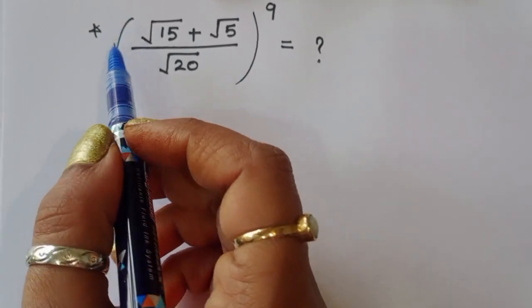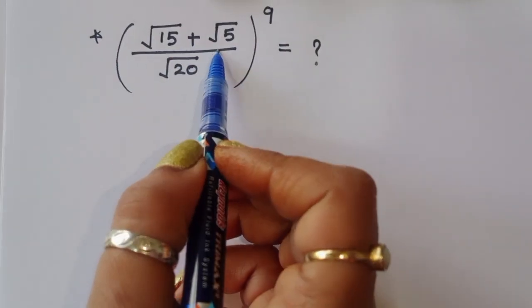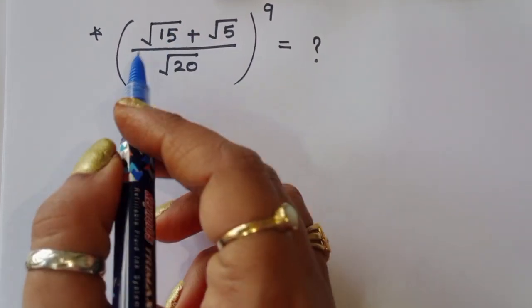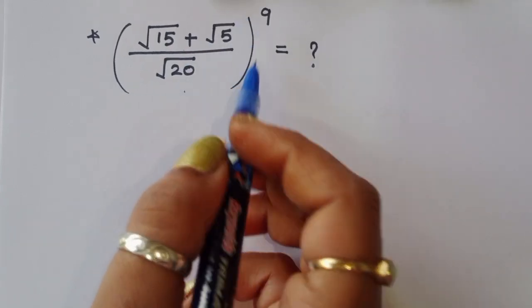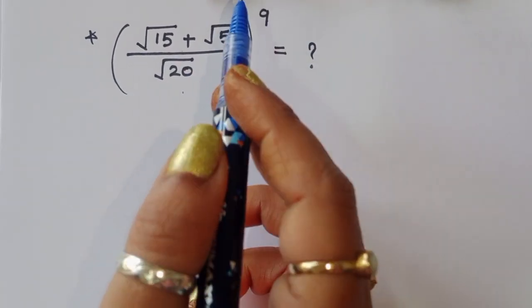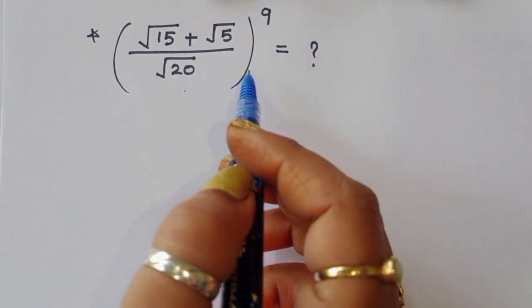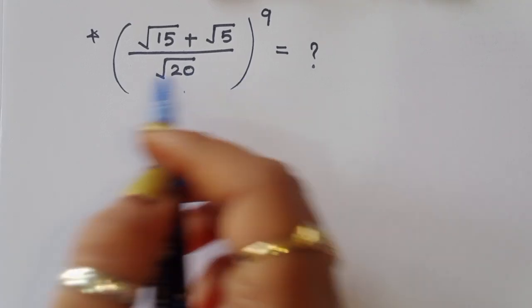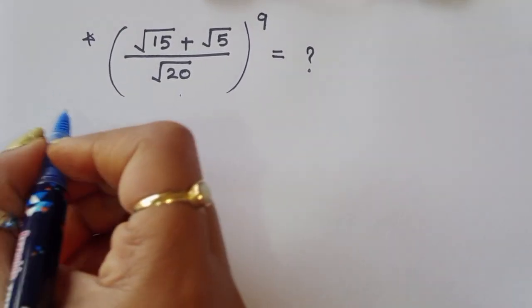The question gives us square root of 15 plus square root of 5, divided by square root of 20, all to the power 9. We have to find out the value of this term. Let's see the solution.